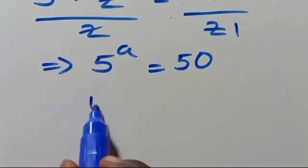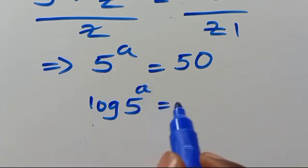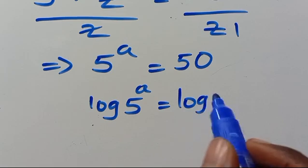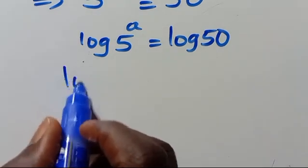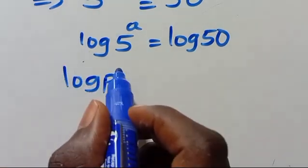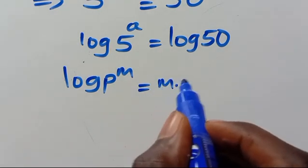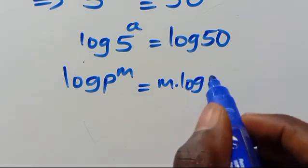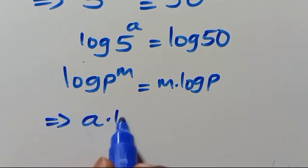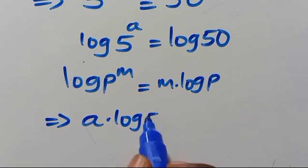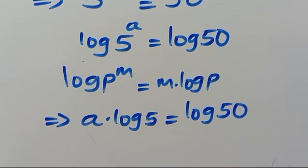We have to introduce log to both sides. We have log of 5 to the power of A equals log 50. So let us recall: when we have log P to the power of M, the power M will come down multiplied by log P. So this implies we have A times log 5 equals log 50.